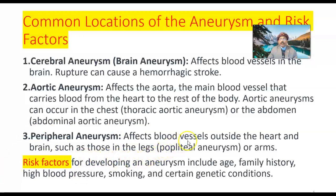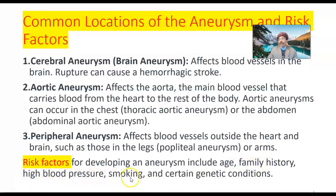Peripheral aneurysms affect blood vessels outside the heart and brain, such as those in the legs — the popliteal aneurysm involves the artery behind the back of the knee. It may also affect the brachial artery in the arm or the axillary artery in the axilla. Risk factors for developing an aneurysm include age, as atherosclerosis advances, family history, high blood pressure, smoking, and certain genetic conditions like Ehlers-Danlos syndrome or Marfan syndrome.